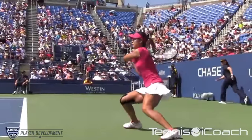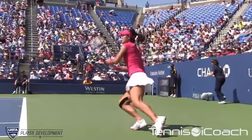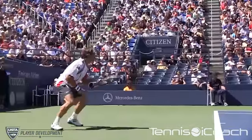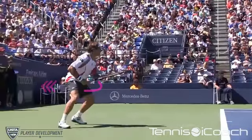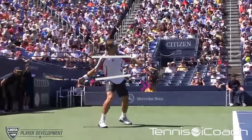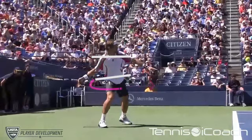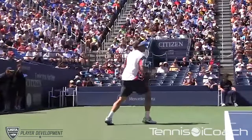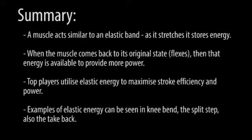In the example of the take-back, coaches can foster elastic energy in their players by simply ensuring that they rotate their shoulders back more than their hips. This puts the muscles of the trunk on stretch, which will provide elastic energy to enhance the stroke.